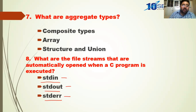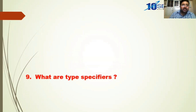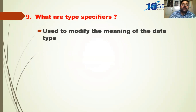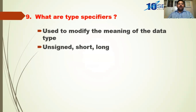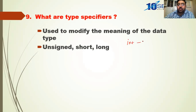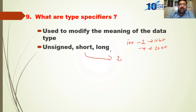So standard input, standard output, and standard error are the three basic file streams automatically opened when a C program is executed — you need not do anything as a programmer. What are type specifiers? Type specifiers are used to modify the meaning of the data type. For example: unsigned, short, long. An integer occupies 2 bytes in a 16-bit compiler and 4 bytes in a 32-bit compiler. Short always occupies 2 bytes and long always occupies 4 bytes, irrespective of the compiler.